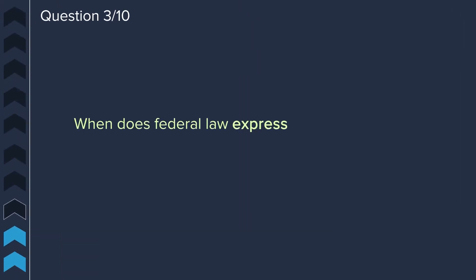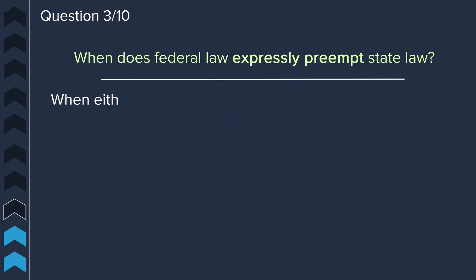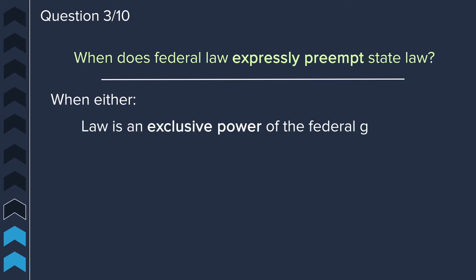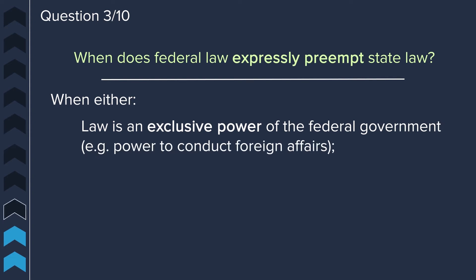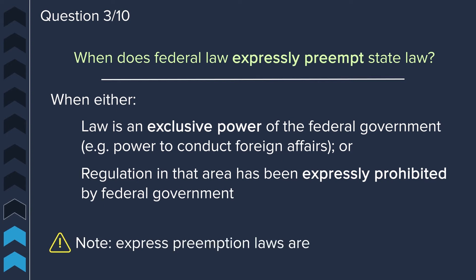Question three. When does federal law expressly preempt state law? Federal law expressly preempts state law when either the law is an exclusive power of the federal government — for example, the power to conduct foreign affairs — or the regulation is in an area that has been expressly prohibited by the federal government. Note: express preemption laws are narrowly construed.